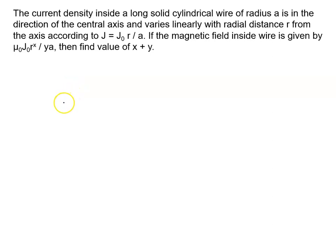The current density inside a long solid cylindrical wire of radius small a is in the direction of the central axis and varies linearly with radial distance r.